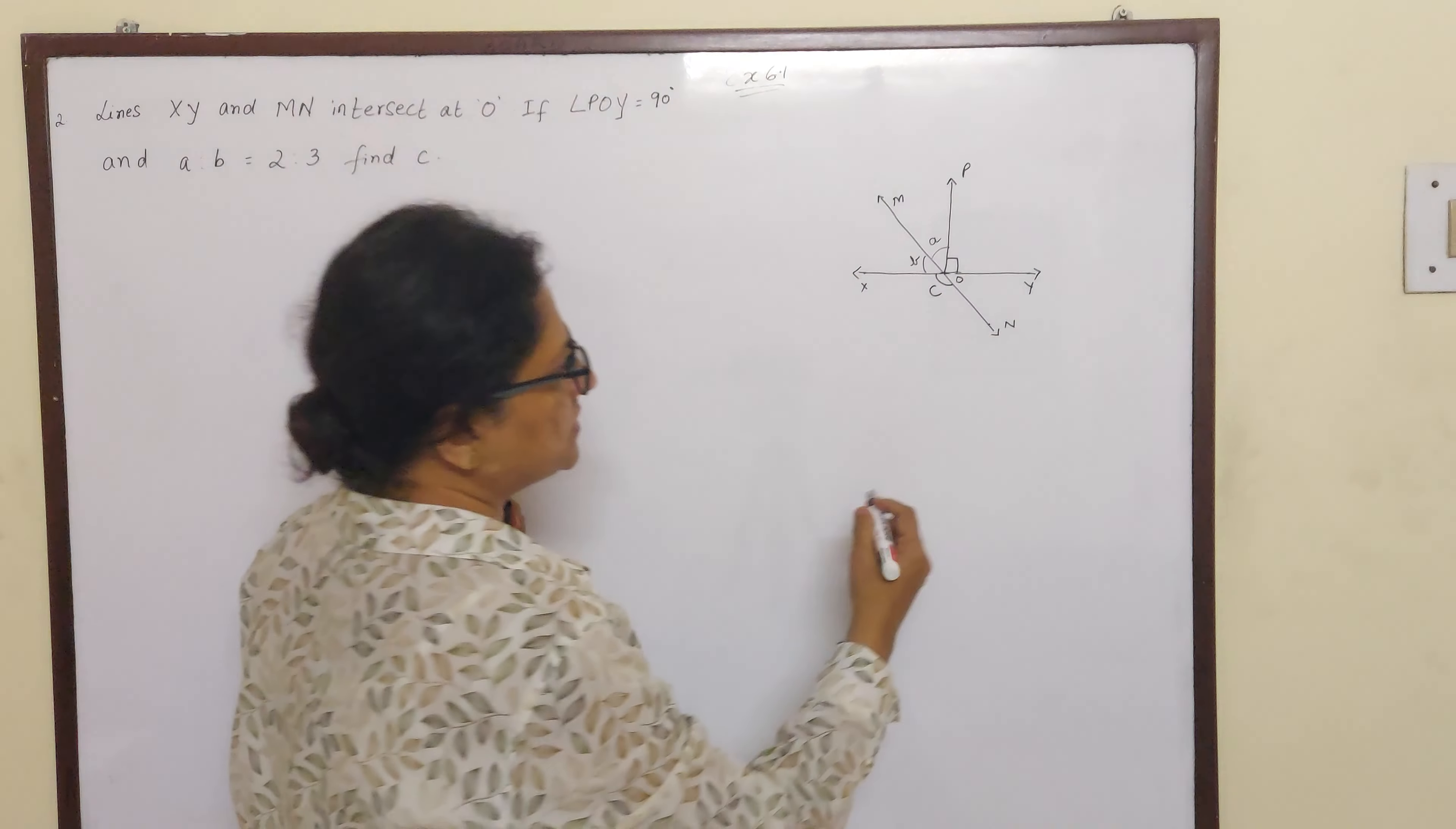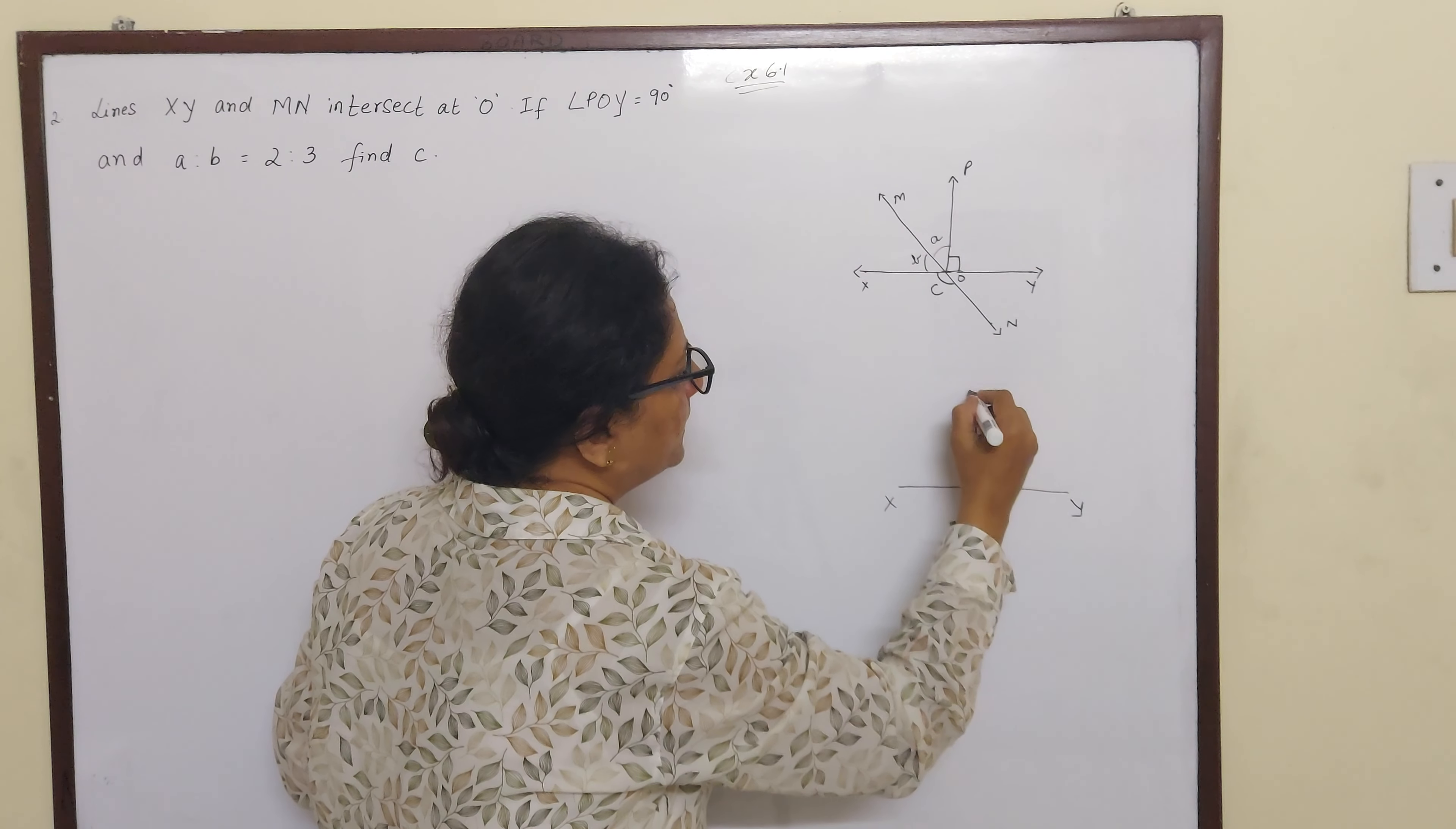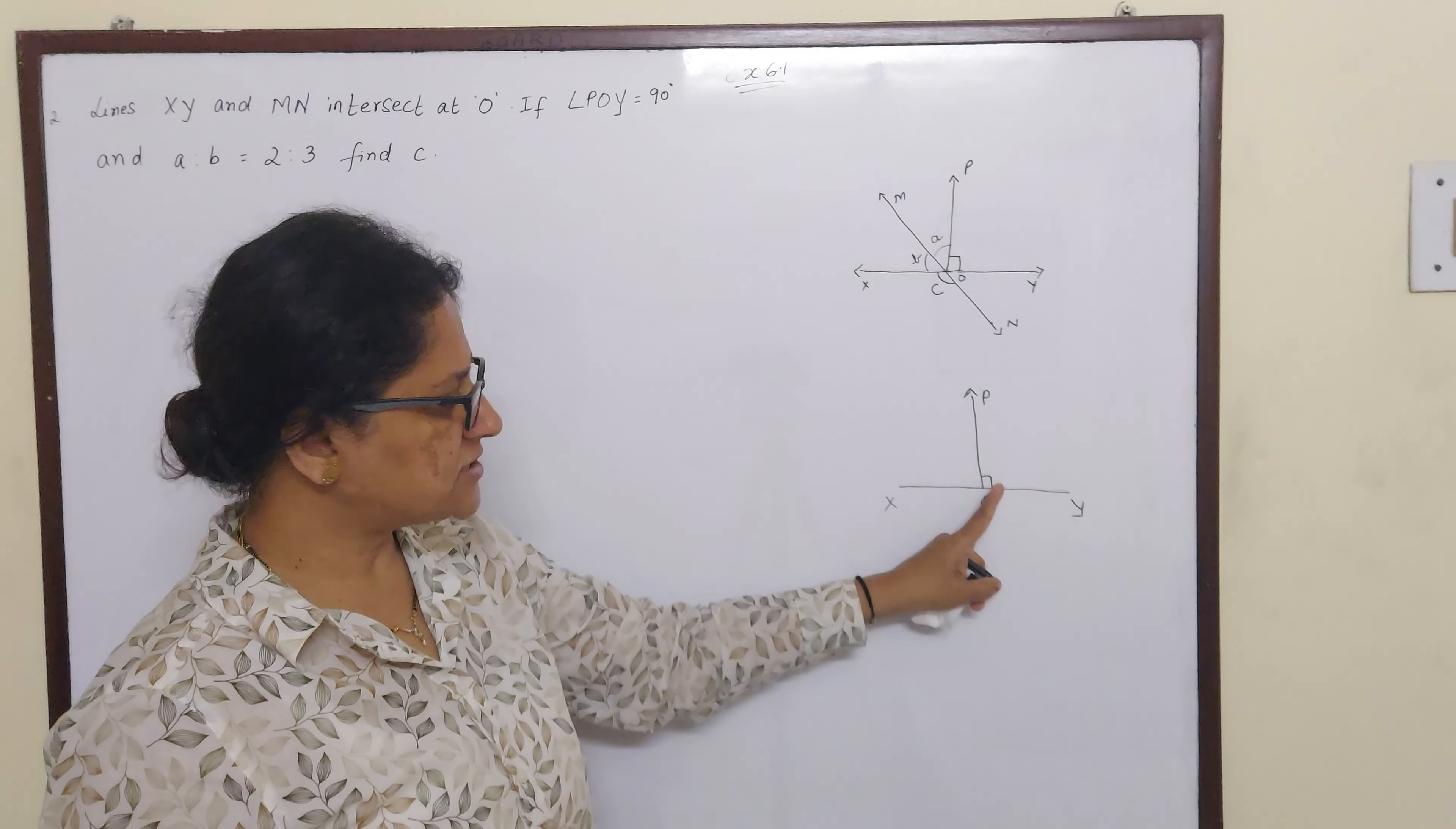So let me break this sum children. Suppose this is a line children XY and this is a line standing on XY, PO, and they have put a box here. What does this suggest?